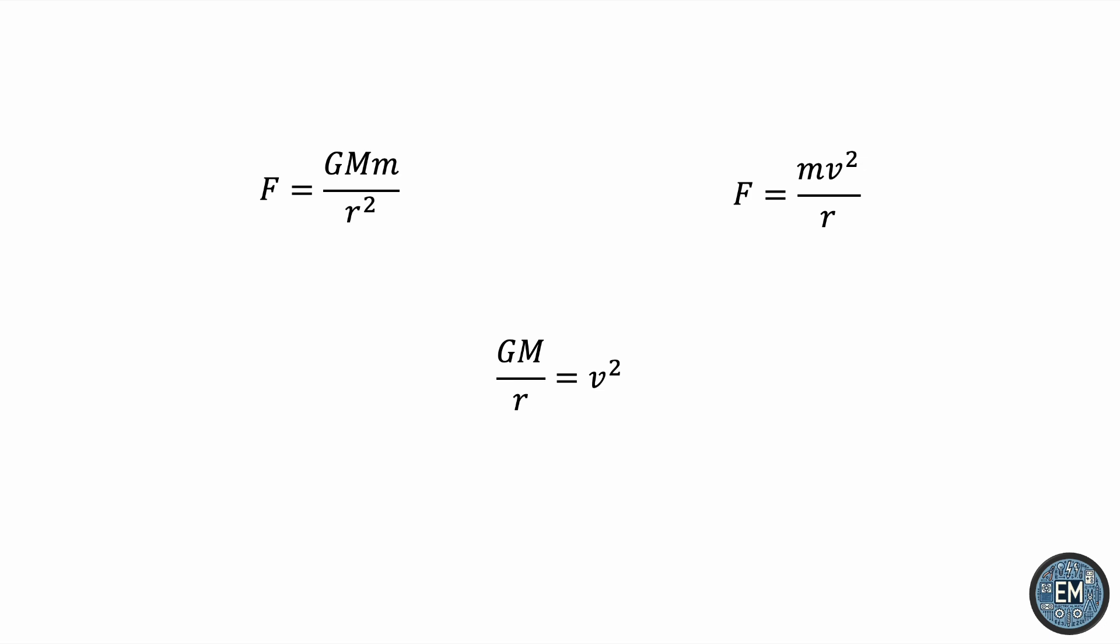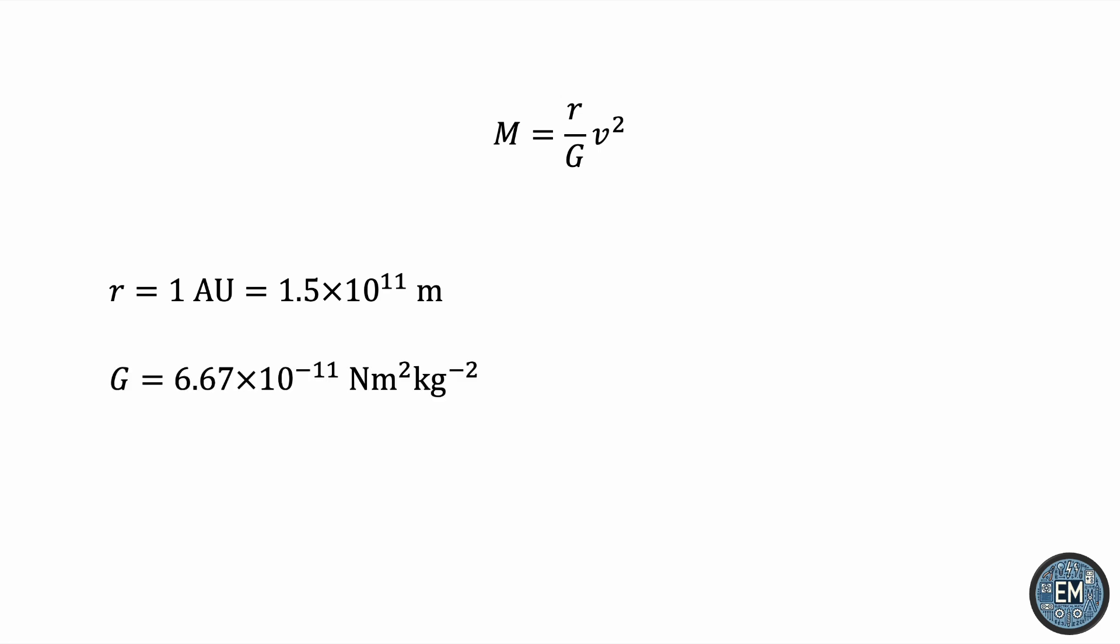Now r is the radius of the circle, which is the distance between the Earth and the Sun, and that is known to be one astronomical unit, approximately 150 million kilometers or 1.5×10¹¹ meters. G is the gravitational constant, 6.67×10⁻¹¹. But what is v? v is the speed at which Earth is orbiting around the Sun.